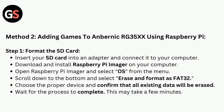Method 2, Step 1: Format the SD card. Insert your SD card into an adapter and connect it to your computer. Download and install Raspberry Pi Imager on your computer. Open Raspberry Pi Imager, select OS from the menu, scroll down to the bottom, and select Erase and format as FAT32. Choose the proper device and confirm that all existing data will be erased. Wait for the process to complete — this may take a few minutes.